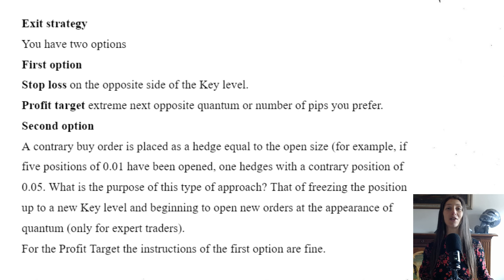Exit strategy. You have two options. First option: Stop loss on the opposite side of the Key Level. Profit target: Extreme next opposite Quantum, or a number of PIPs you prefer.